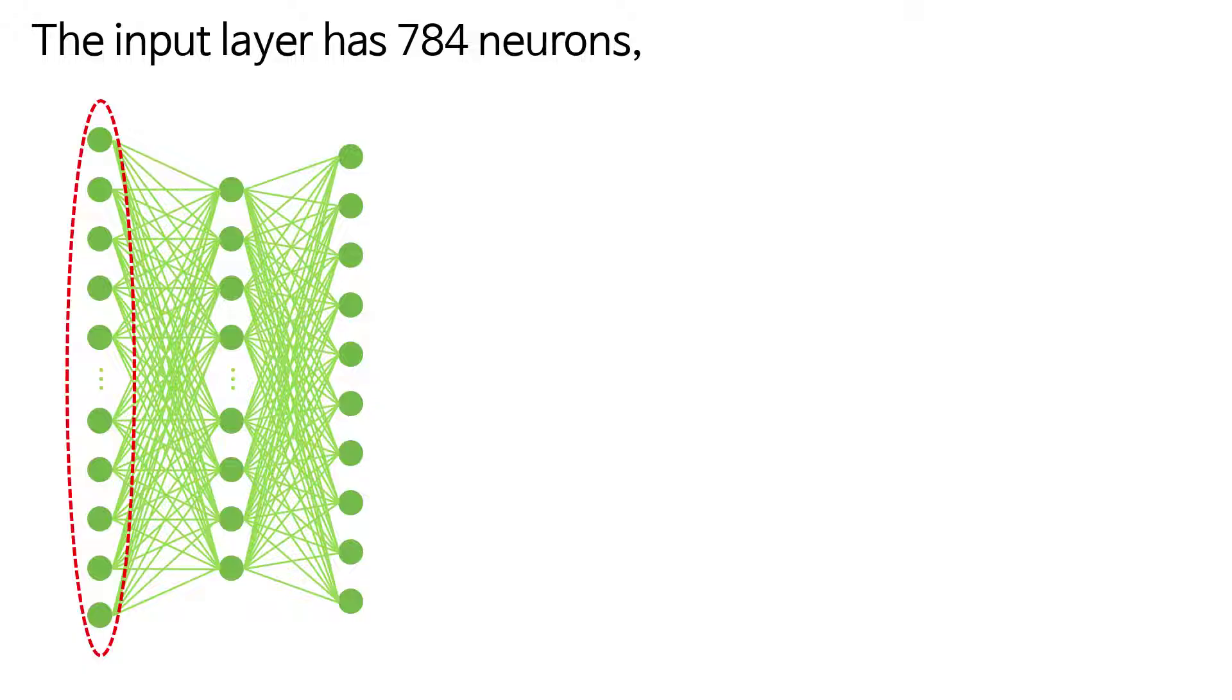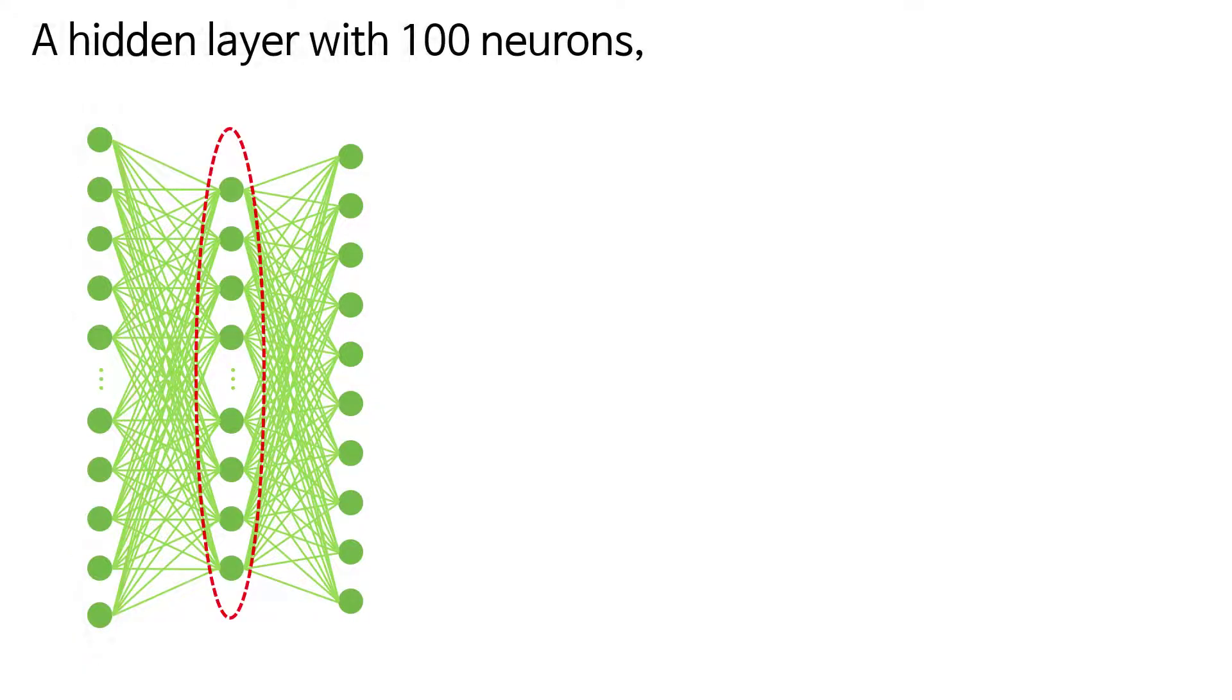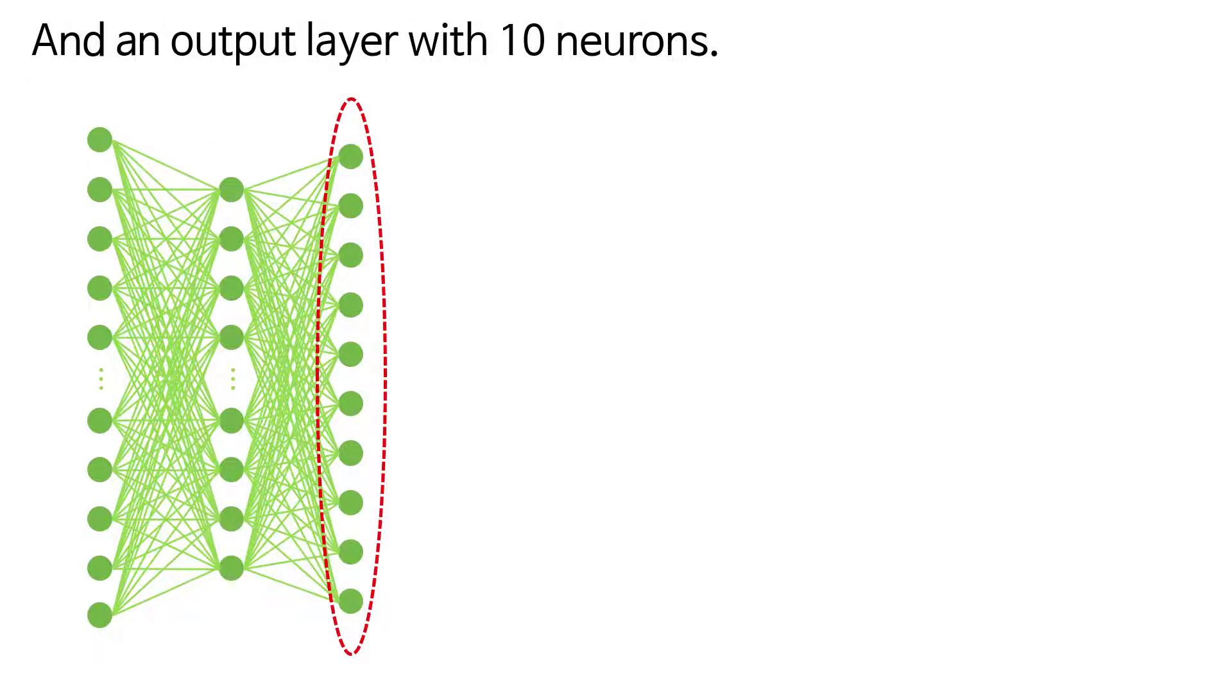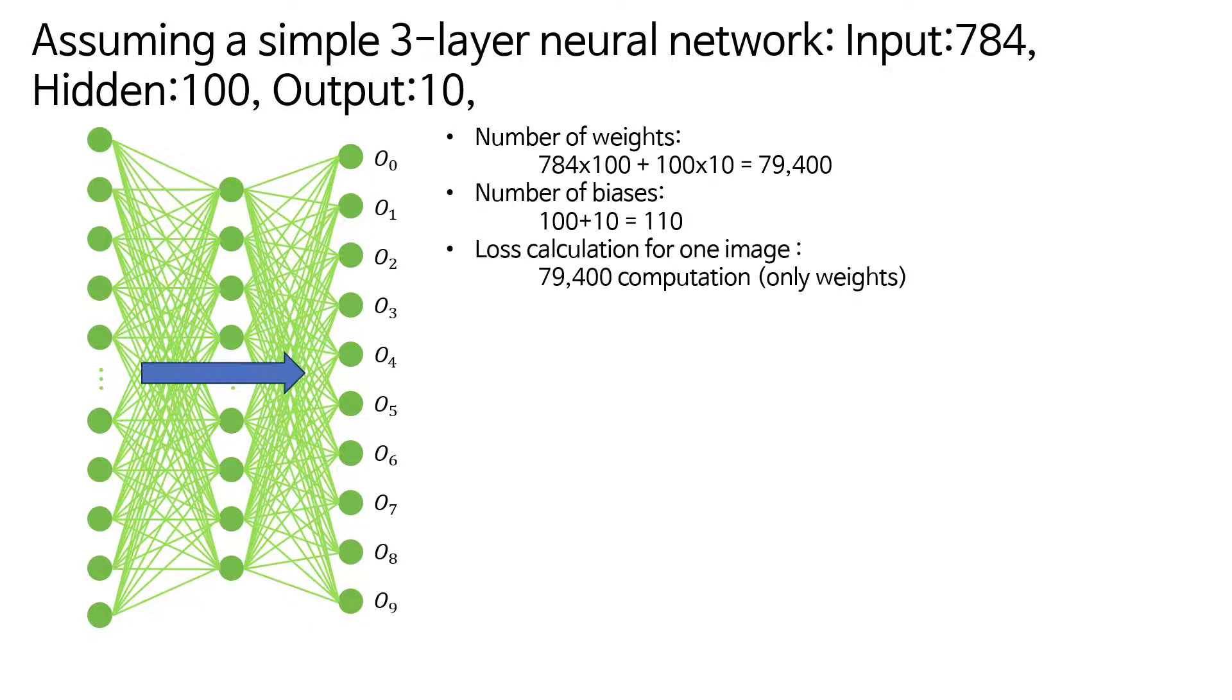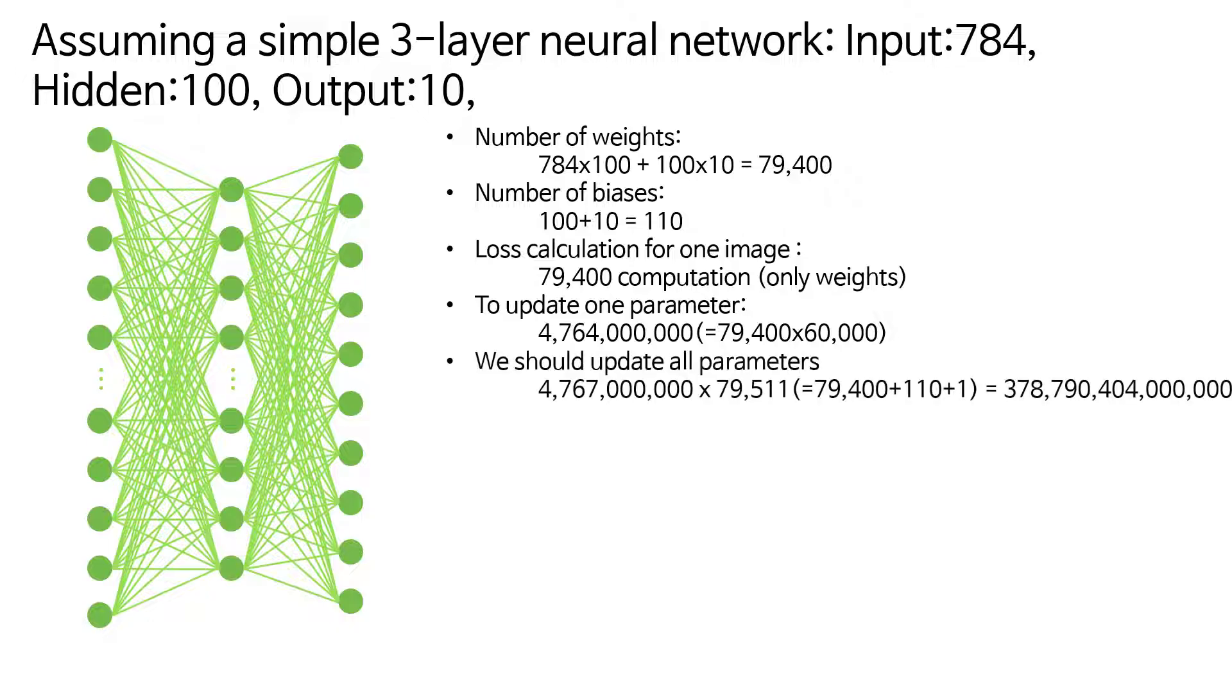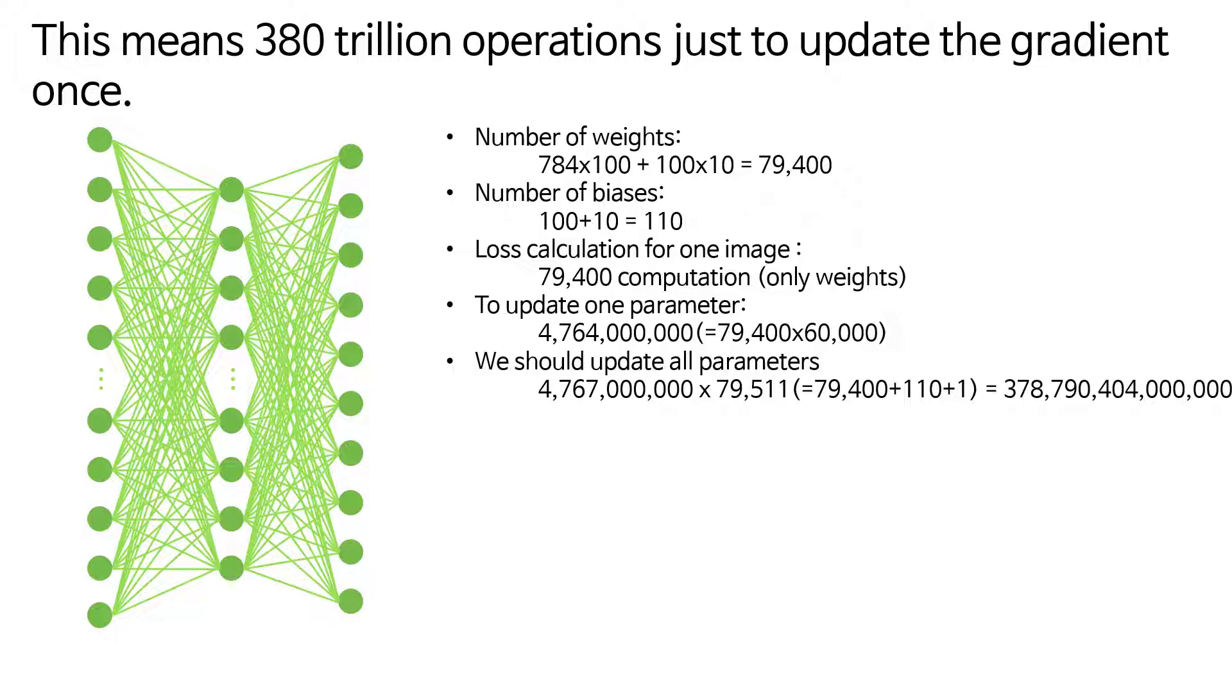If we make a neural network to recognize these digits, the input layer has 784 neurons, a hidden layer with 100 neurons, and an output layer with 10 neurons. We need to calculate connection weights, biases, and the loss for one image. To update one parameter, we need to compute for all parameters. This means 380 trillion operations just to update the gradient once.